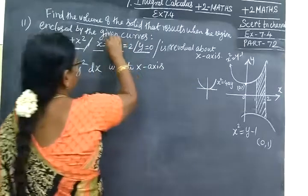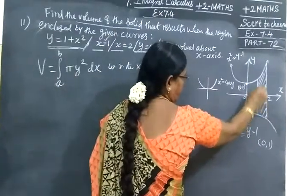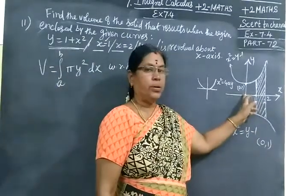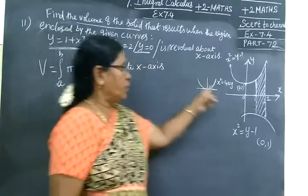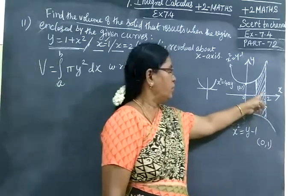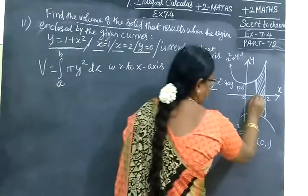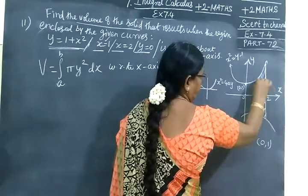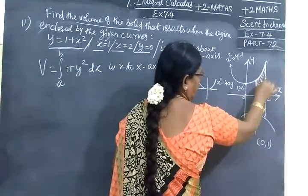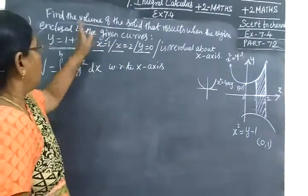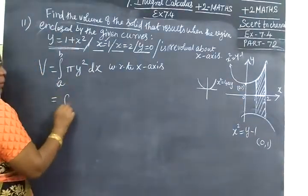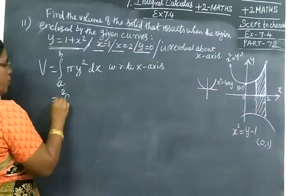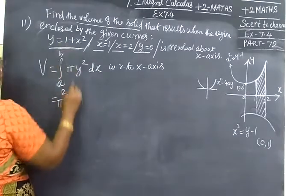x equal to 1 is a line parallel to y-axis. x equal to 2 is a line parallel to y-axis. And y equal to 0 is nothing but the x-axis. This region is what we need.